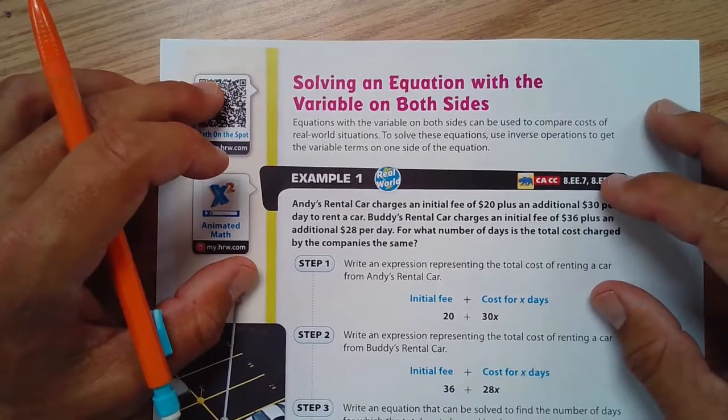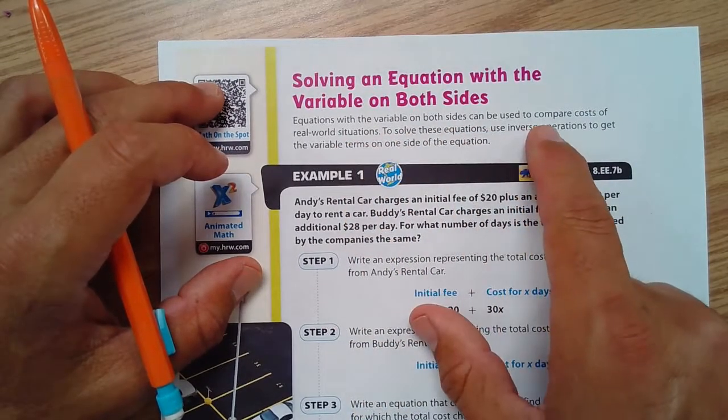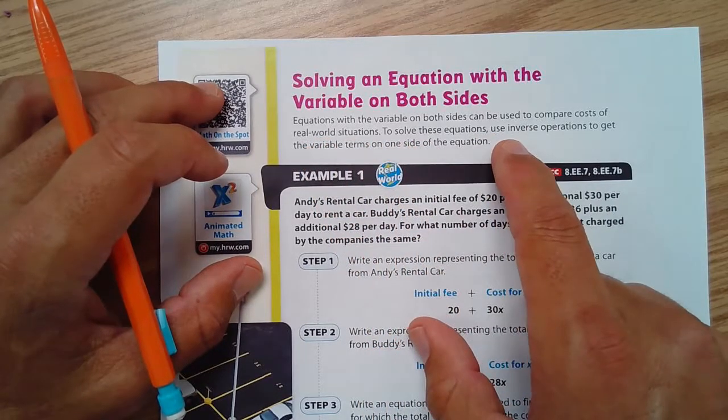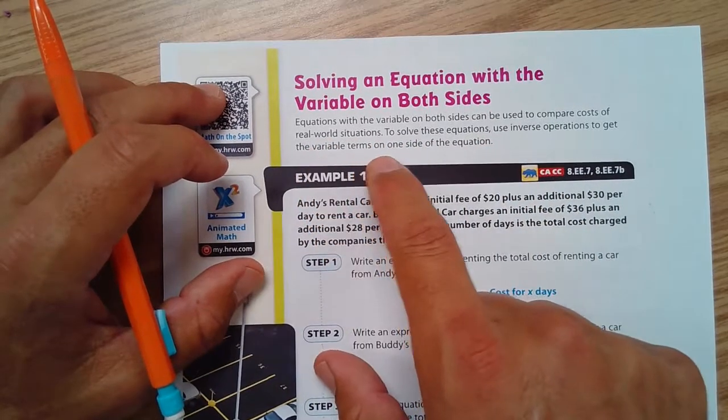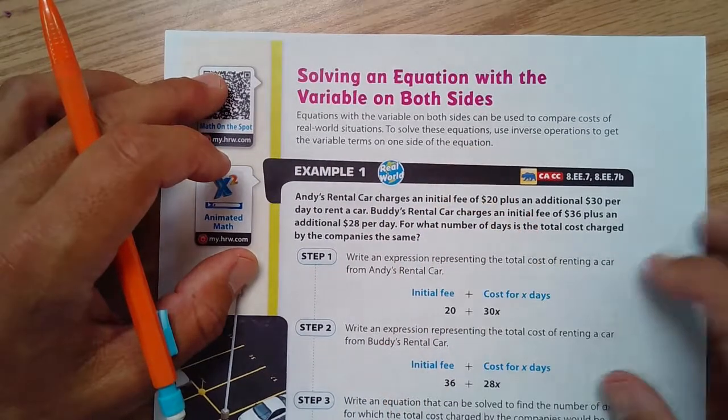Okay, solving an equation with a variable on both sides. Equations with variables on both sides can be used to compare costs of real-world situations. To solve these equations, use inverse operations to get the variable terms on one side of the equation. That's key right there.